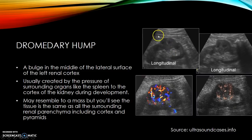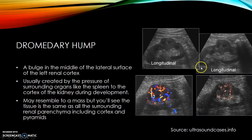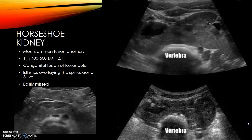A dromedary hump is a bulge in the middle of the kidney, usually the left kidney, caused by the impression of the spleen on the developing kidney. In a dramatic case you might think there's a tumor, but you can see normal renal pyramids and normal cortex. A true tumor would have a heterogeneous echo texture. If there's real doubt, a CT scan can rule it out, but a dromedary hump is pretty common in the left kidney and nothing to worry about.